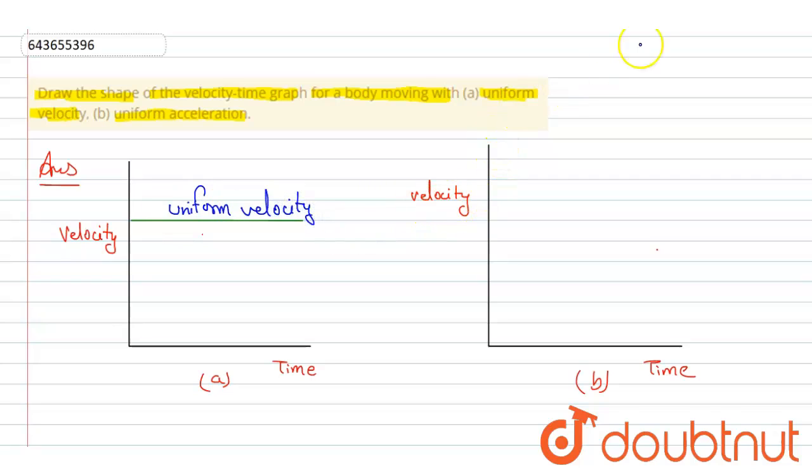Okay, and here the second part shows the uniform acceleration. So acceleration is the rate of change of velocity per time.